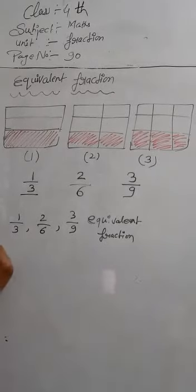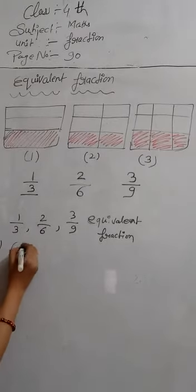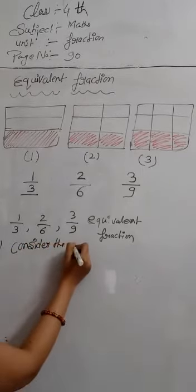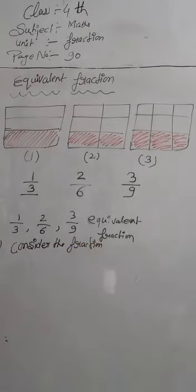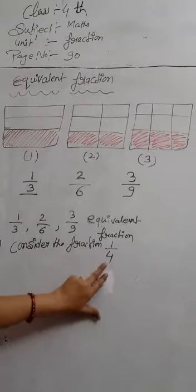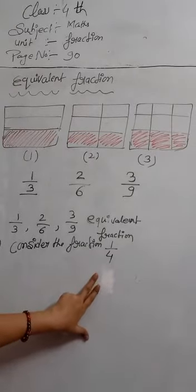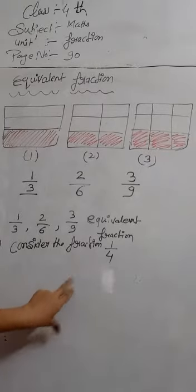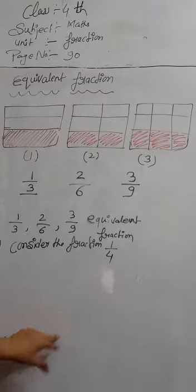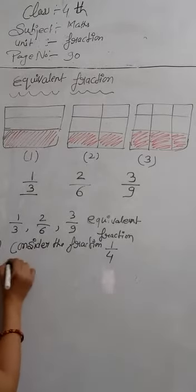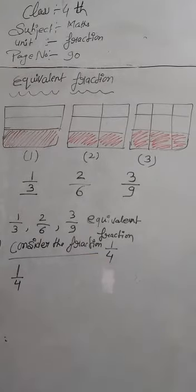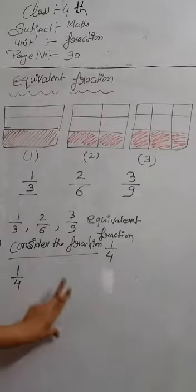Now, let us obtain equivalent fractions of the fraction one by four by multiplying the numerator and the denominator of the fraction one by four by the same number. Here we consider the fraction one by four.